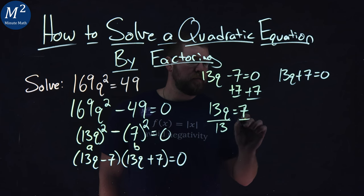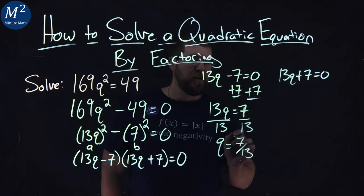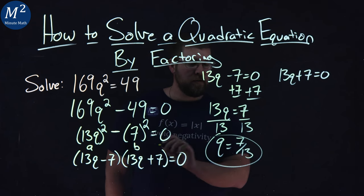From there, divide 13 to both sides, and q = 7/13. Nothing wrong with keeping it like that.